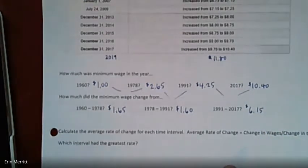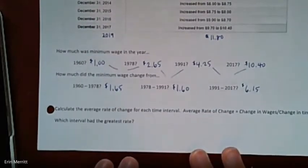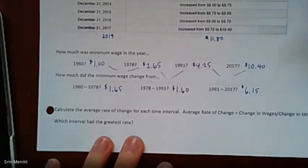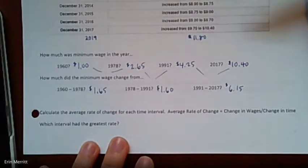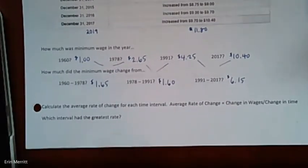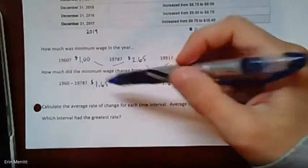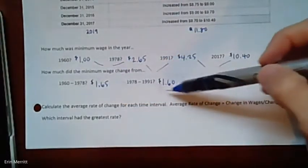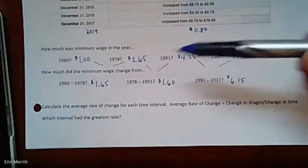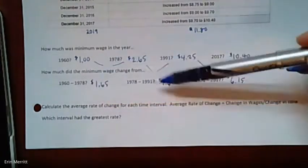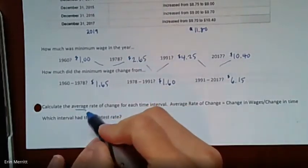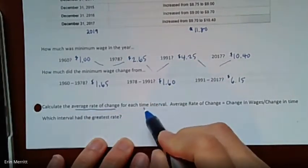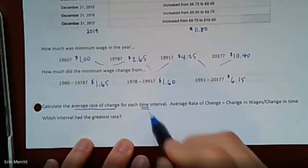From 1978 to 1991, the difference here, and you could subtract on your calculator if need, comes out to be $1.60. And then from '91 to 2017, there's a big increase there. So $6.15. And so when it says calculate the average rate of change for each time interval, right? When we say average rate of change, so literally on average, how much money changed, but you have to consider, right, how much did it change over the given amount of time?